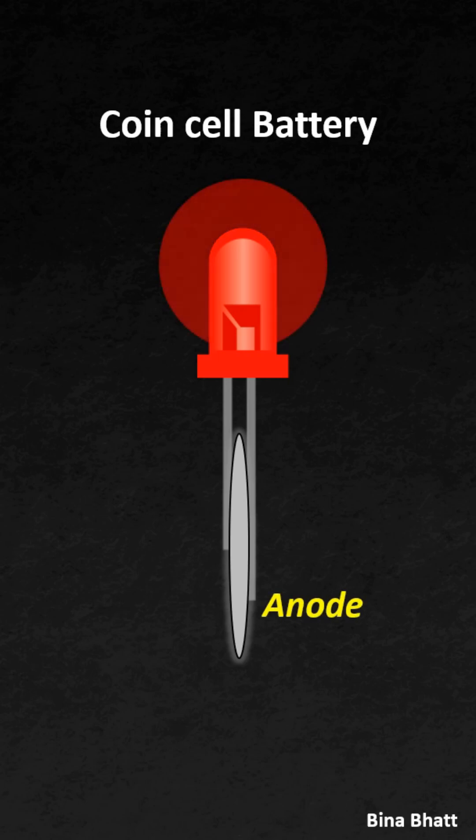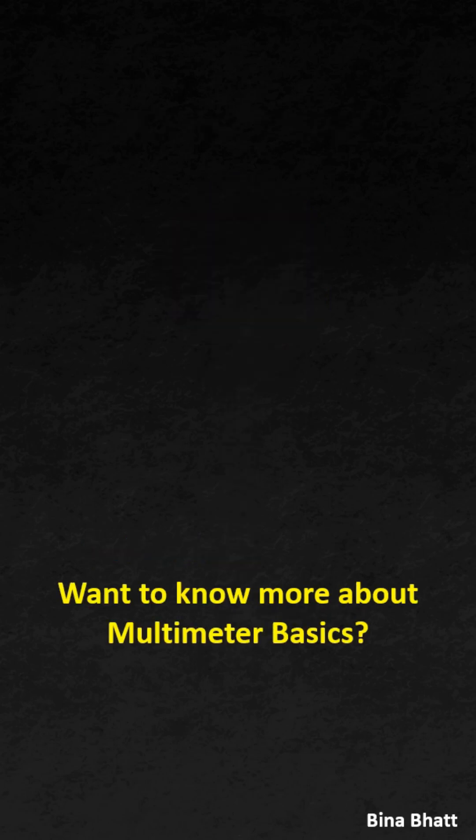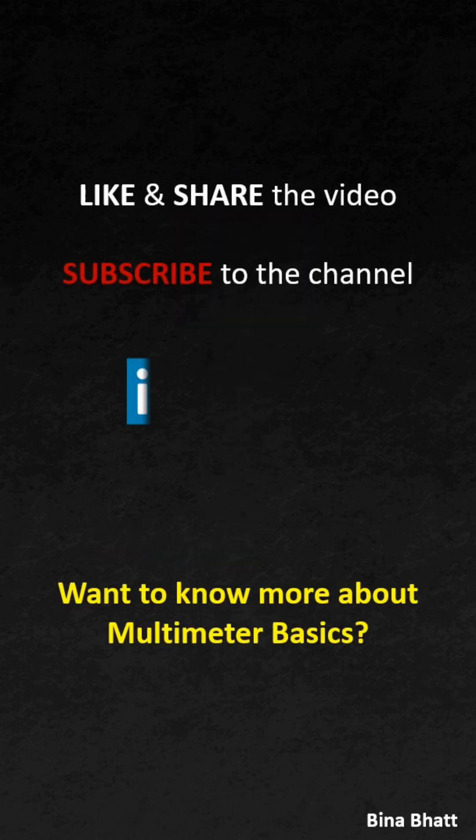If the LED lights up, then the lead which is in contact with the positive end of the battery is the anode and the other one is obviously the cathode. So these are just a few ways to determine the polarity of an LED — if you know other methods, mention them in the comment section below.